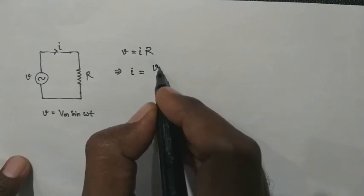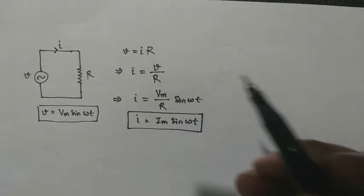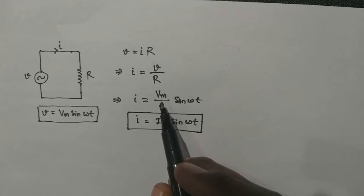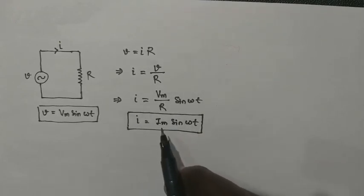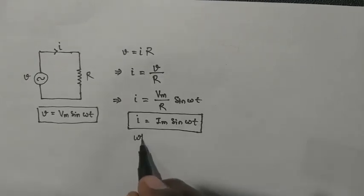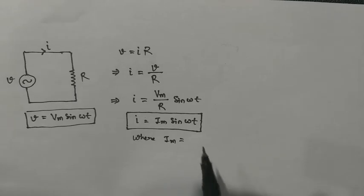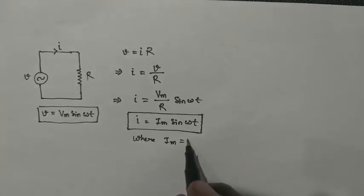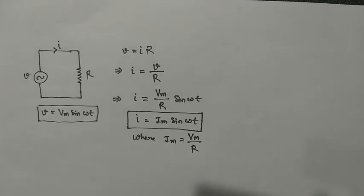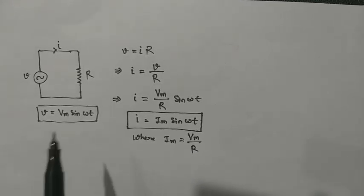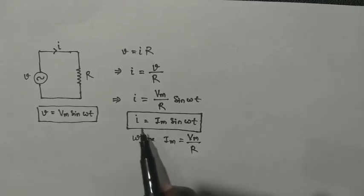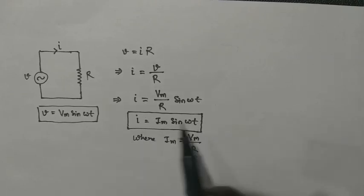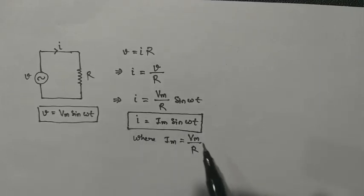Before drawing the waveform we can write the characteristic equation. We know from Ohm's law that V equals I into R. So if voltage is given as V = Vm sin(ωt), then current I = V/R = Im sin(ωt), where Im = Vm/R, which is the peak value of the current. We can see from these instantaneous values that there is no phase difference between voltage and current.